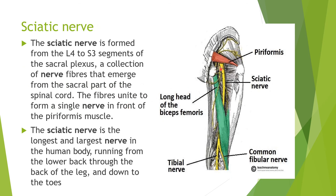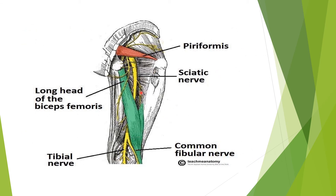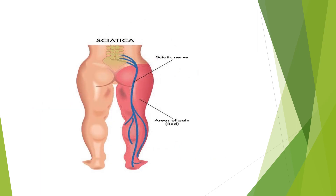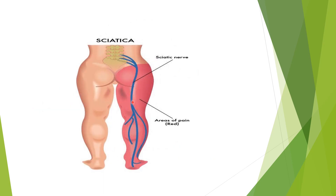The sciatic nerve is formed from L4 to S3 segments of the sacral plexus — a collection of nerve fibers that emerge from the sacral part of the spinal cord. The fibers unite to form a single nerve in front of the piriformis muscle. The sciatic nerve is the longest and largest nerve in the human body, running from the lower back through the back of the leg down to the foot. It divides into the common peroneal (common fibular) nerve and the tibial nerve.